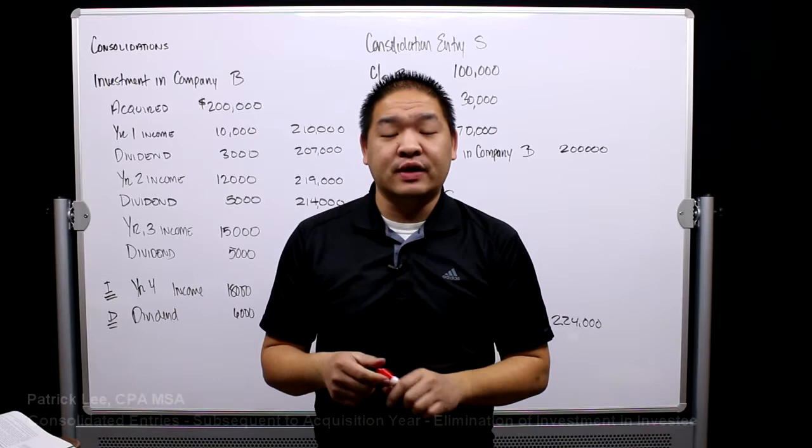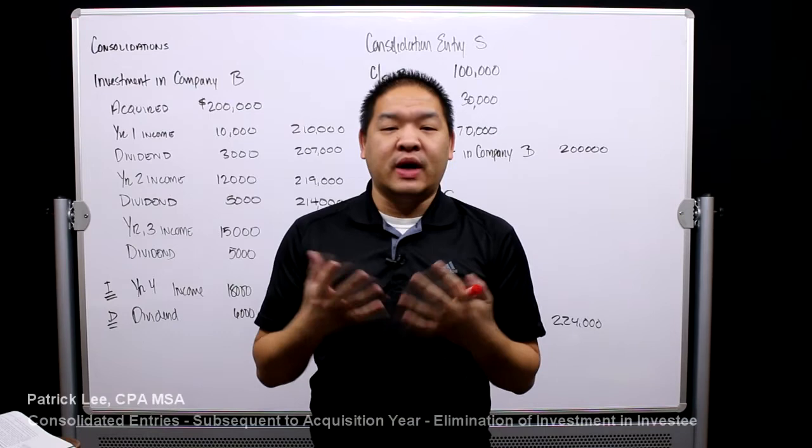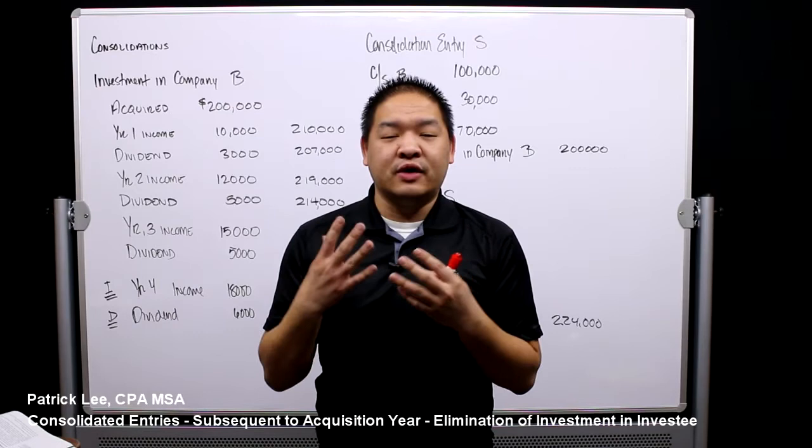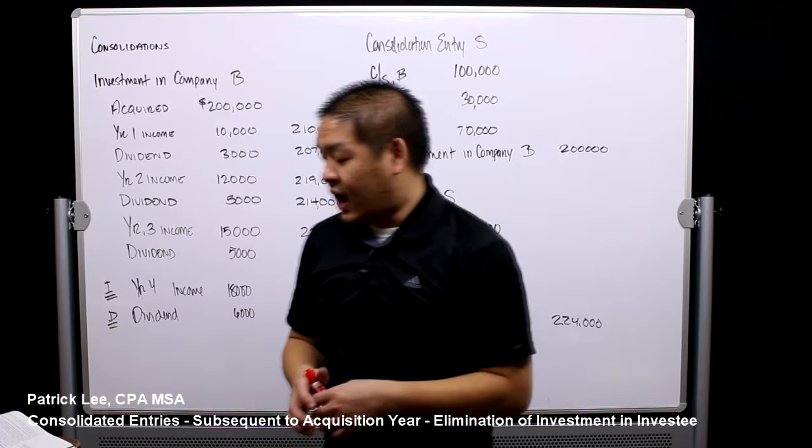In this lesson we're going to expand on the last lesson — what do we do in subsequent years — and talk about what happens to the investment in Company B account on the parent company's books. We're really only going to look at one entry, and that's consolidation entry S.